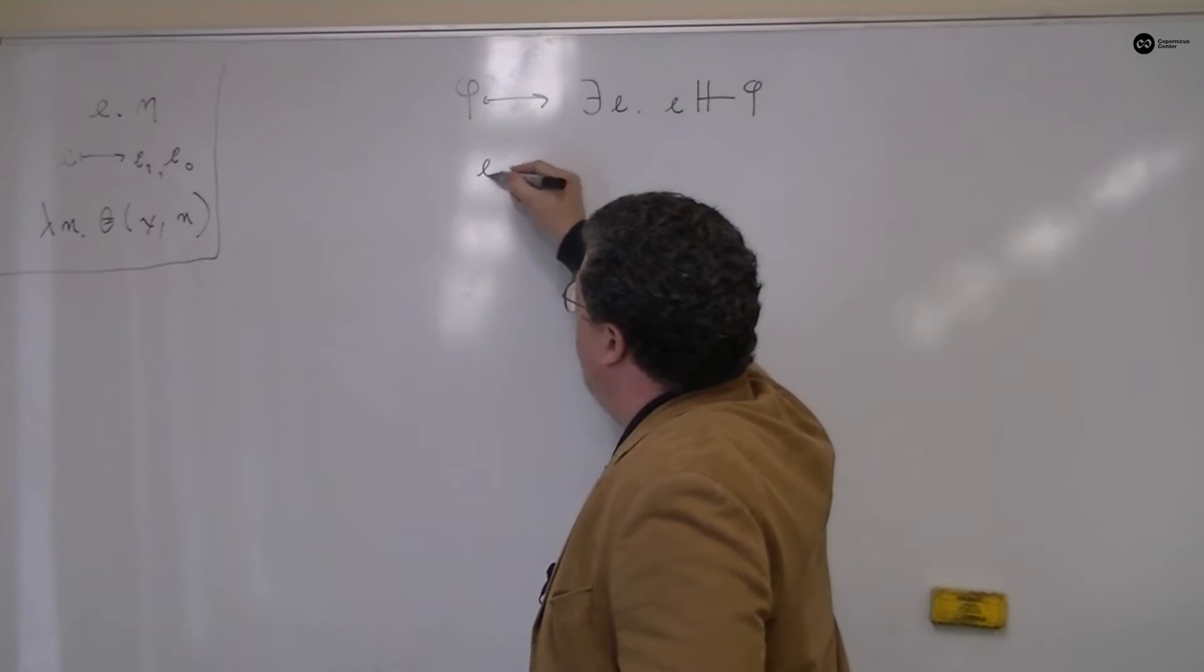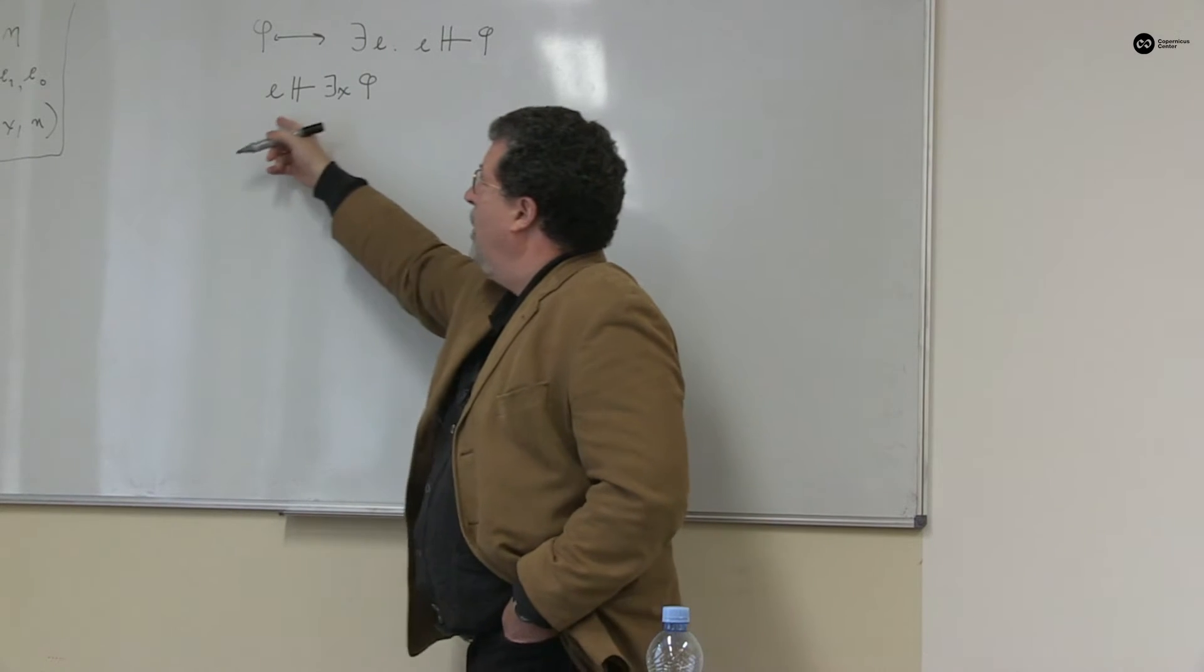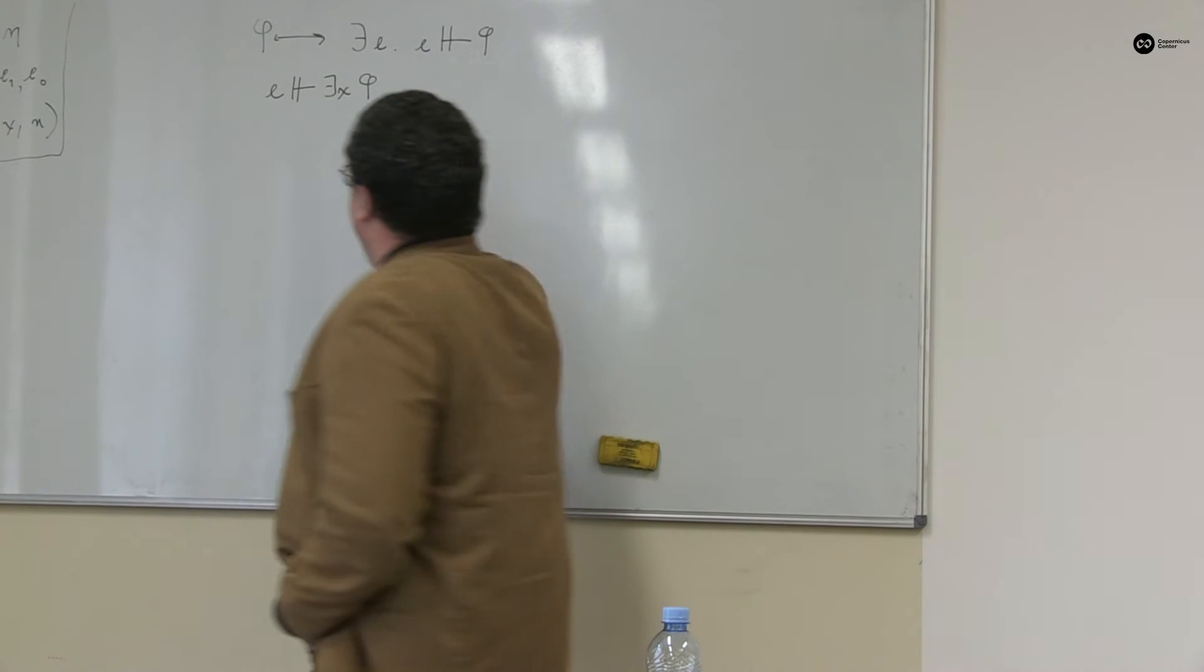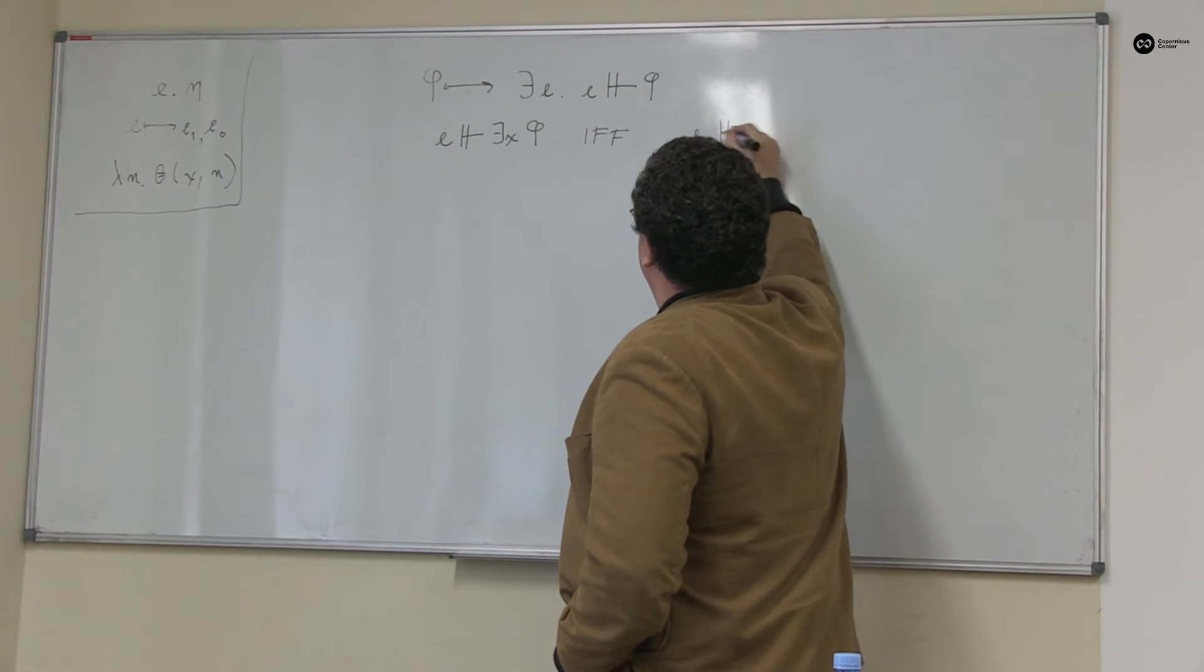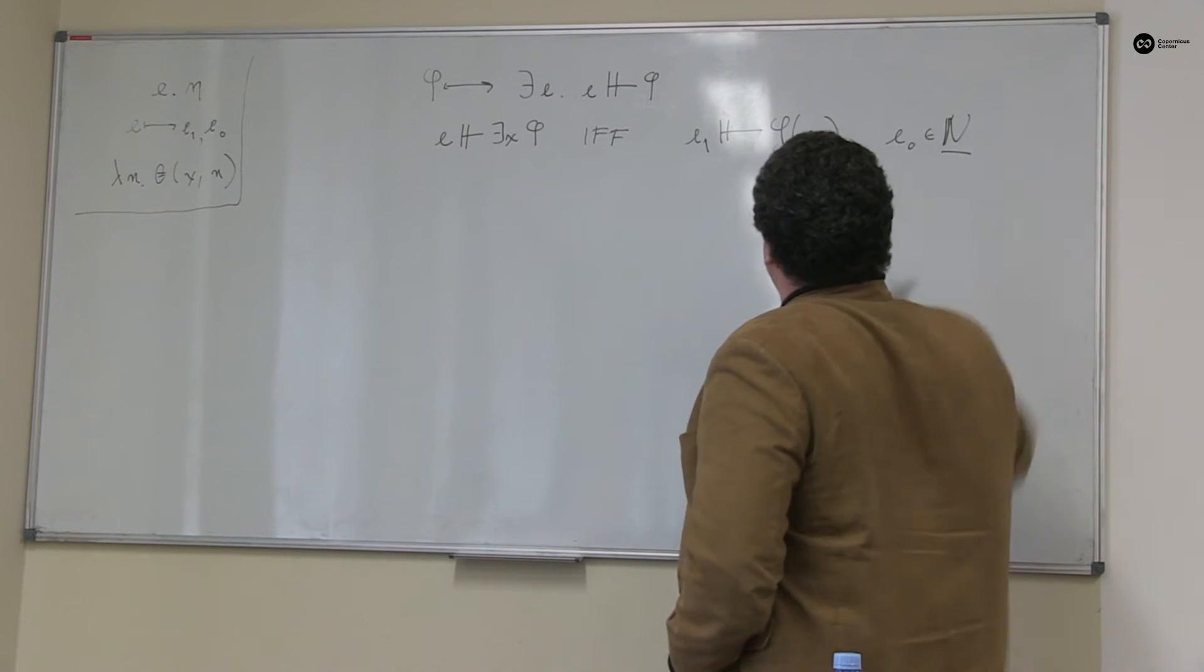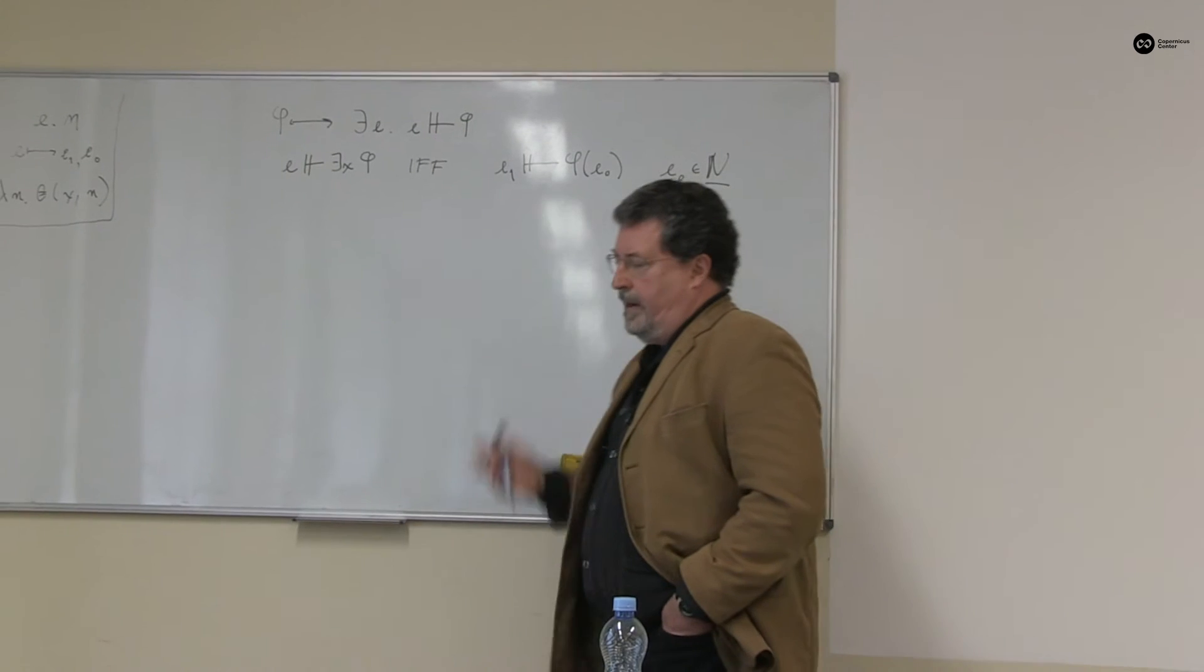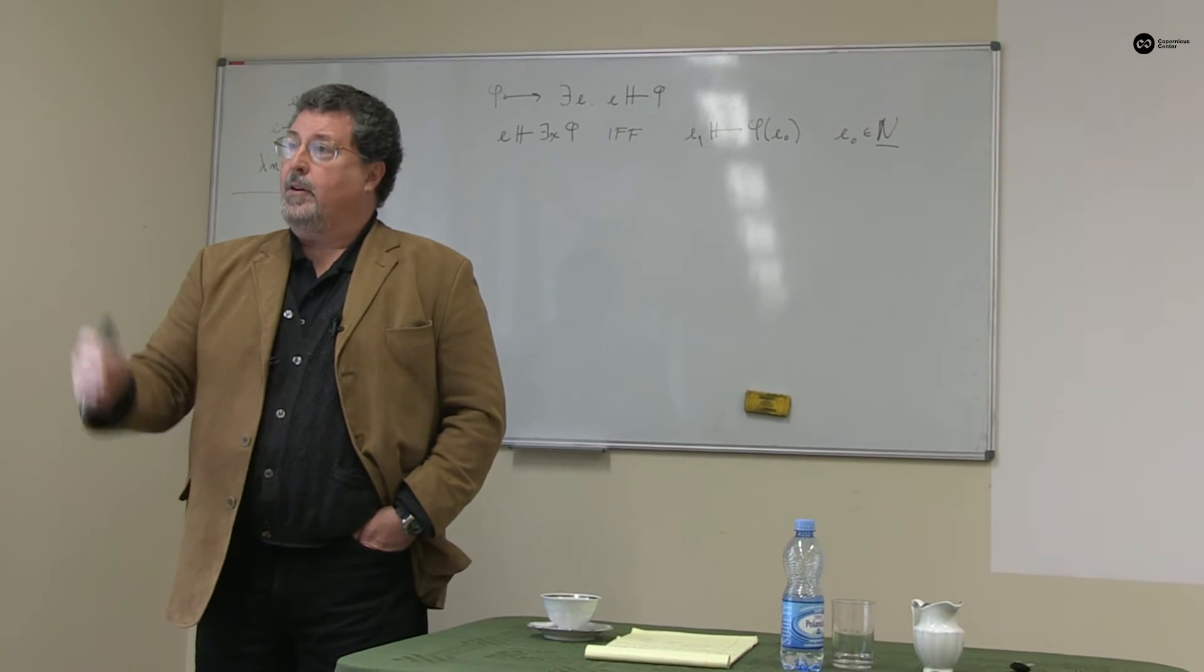I shall say that natural number e encodes a construction of there exists x phi, where here I'm thinking of all my variables throughout as ranging over natural numbers. That's not necessary, but for the present purposes it will be no limitation. This holds if and only if I can do unpairing on e and e1 encodes a construction such that phi holds of e0. Just write that there to remind ourselves that e0 is a natural number. And so I have a construction that constructs an existential statement if and only if that construction can be effectively broke apart into two sub-constructions, the second of which is a construction that phi holds on the first of which.